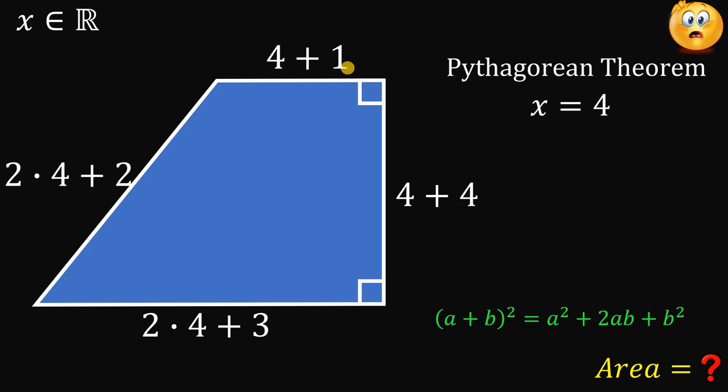Now, let's simplify. 4 plus 1, this will give us 5. 2 times 4 is 8 plus 2, this will give us 10. 2 times 4 is 8 plus 3, this is 11. And 4 plus 4, this will give us 8. Now, at this point, we are now ready to find the area of this trapezoid.